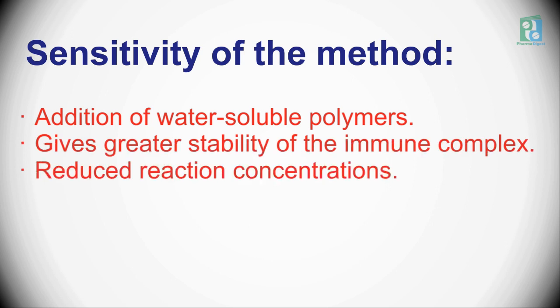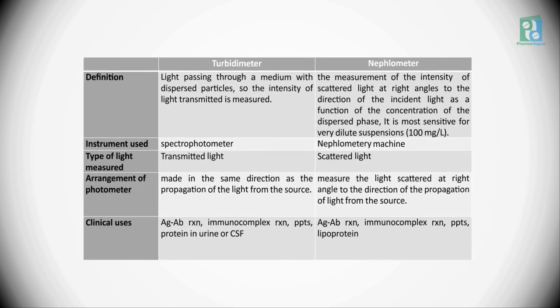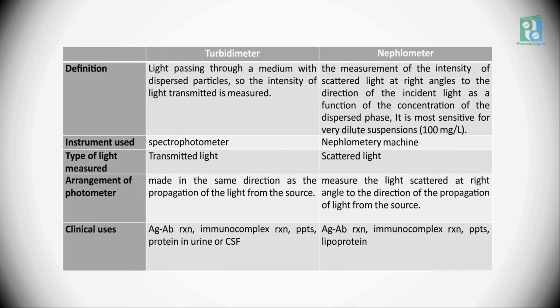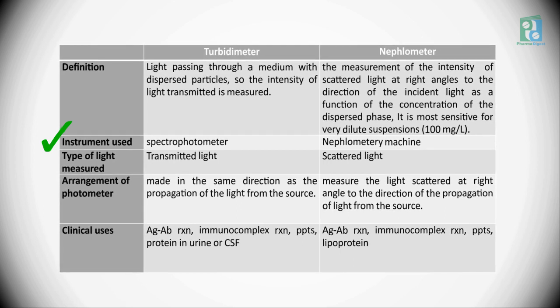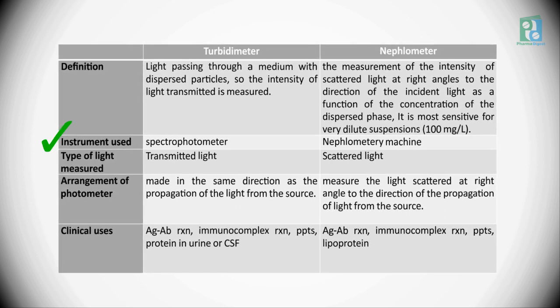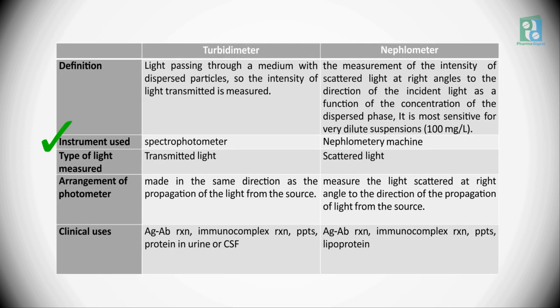Sensitivity of the method is improved by the following: addition of water-soluble polymers, which gives greater stability of the immune complex, reduces reaction concentrations, and increases sensitivity. The major difference between turbidometer and nephelometer is the instrument used. In a turbidometer, a plain spectrophotometer can be used. In a nephelometer, nephelometry machines are used.